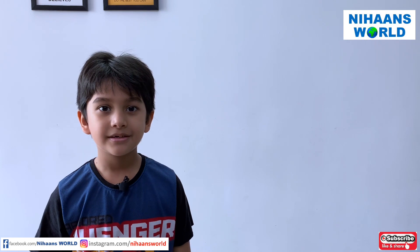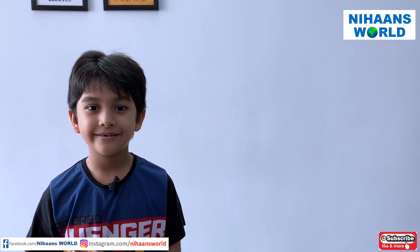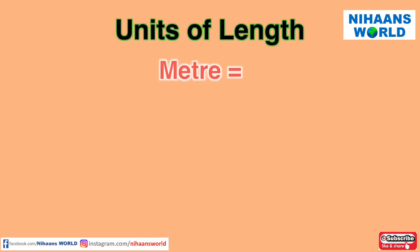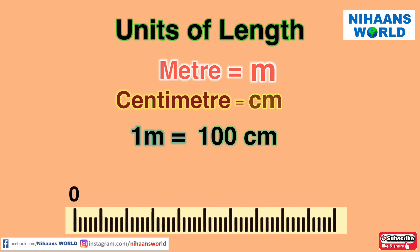Now let us learn about standard units of measurement. Units of length: meter and centimeter. The short form of meter is m, and the short form of centimeter is cm. 1 meter is equal to 100 centimeters. When a meter is divided into 100 smaller units, each unit is called a centimeter.